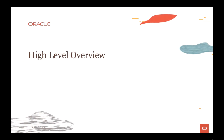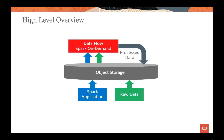Let's look at the high-level overview of the OCI Data Flow service. As you can see in the diagram, you have your Spark application or raw data in the bottom layer, which you bring into object storage — a native OCI service. On top of that is the Data Flow service, which is a Spark-on-demand service that picks up the data and the application stored in object storage and runs the job. Once the job finishes, it puts the processed data back into object storage for you to review and look into the logs.